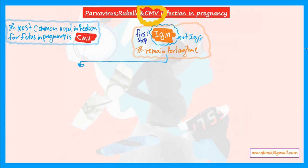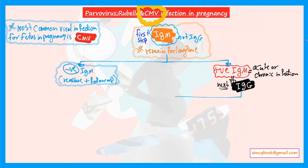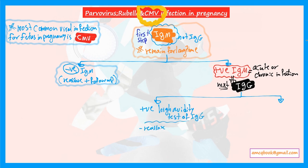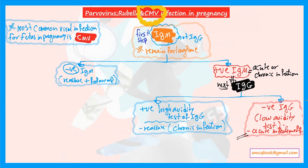If IgM is negative, the woman is not currently infected and was not infected within at least one to two years — just reassure and follow up. If IgM is positive, that means either acute or chronic infection. The next step is IgG, also called the avidity test. If IgG is positive (high avidity), meaning IgG has formed in large numbers over a long time, that indicates chronic infection — reassure, as she was previously infected.